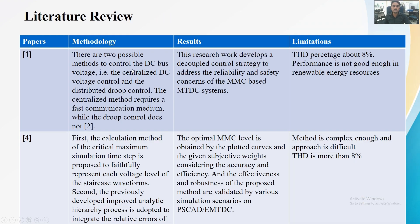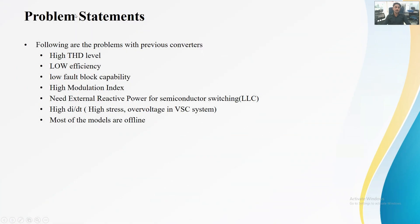These are the literature reviews from where we have taken the problem statements — what were the problems in previous and other topologies. The problem statements taken from the literature review are: other topologies have high THD level, low efficiency, low fault tolerance capability, high modulation index, they needed external reactive power to turn on switching devices, they have high di/dt and dv/dt stress, and most of them are offline.